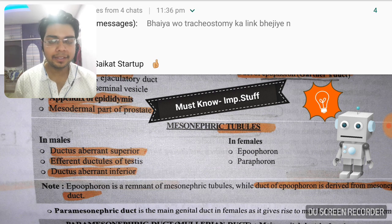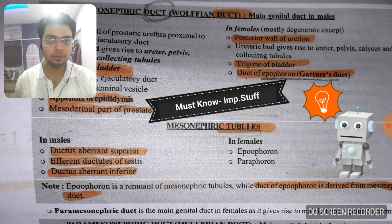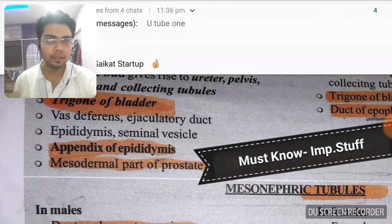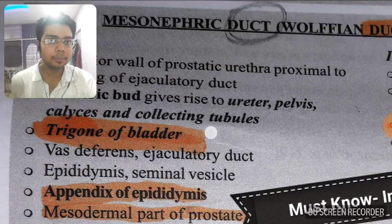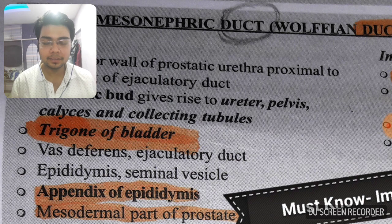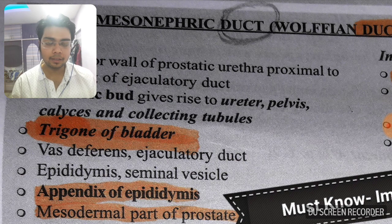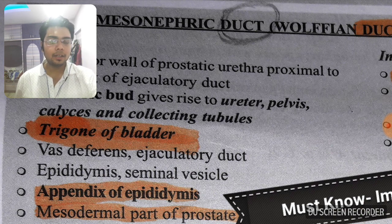The mesonephric duct is also called the Wolffian duct in case of males. To remember this, you can consider males as wolves — so the Wolffian duct belongs to males, that is the mesonephric duct. The paramesonephric duct, with the prefix 'para,' belongs to females.